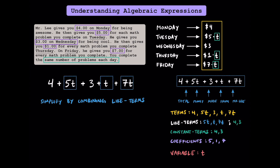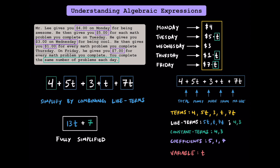Since these are like terms, we can add 5t plus 1t plus 7t to get a total of 13t. Instead of writing these three terms separately, we can combine them by writing one term of 13t. Similarly, we can combine these two like terms of 4 and 3, or these constant terms, to get 7. This is what we would call a fully simplified algebraic expression, because there are no more like terms. That means if you hypothetically completed 5 problems a day, you could substitute 5 in for t and solve for the total amount of money you would make for the week. While you could substitute the 5 into the original expression in three different locations, it would be much easier to substitute it in one time into this simplified expression to get your answer.